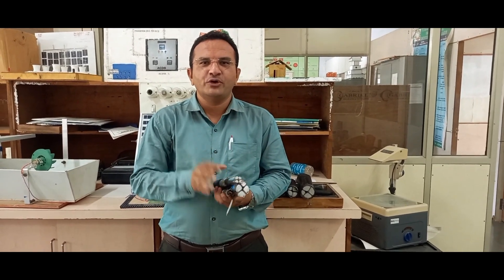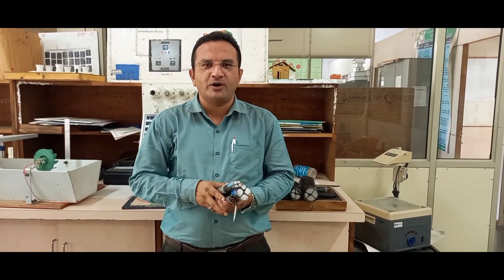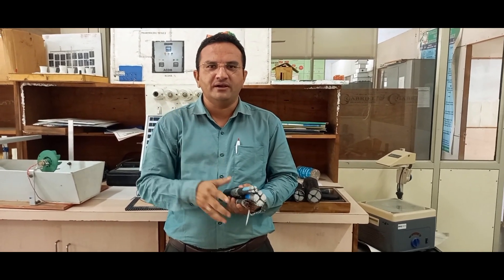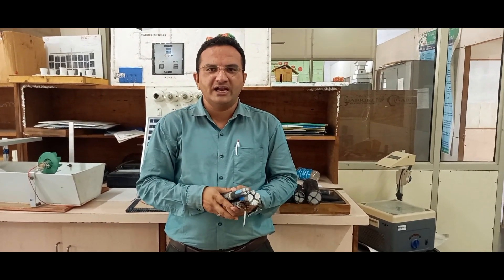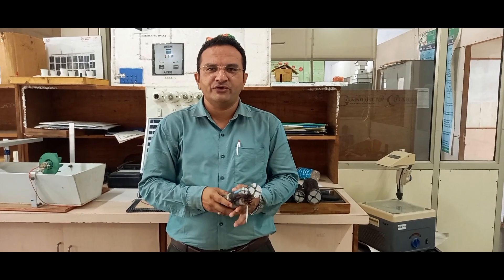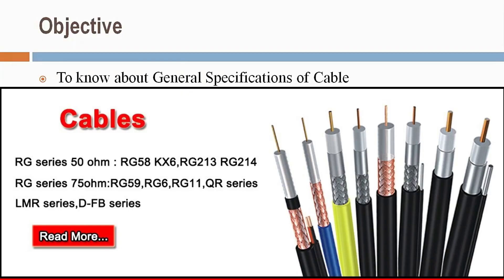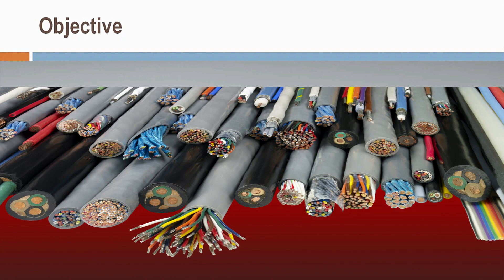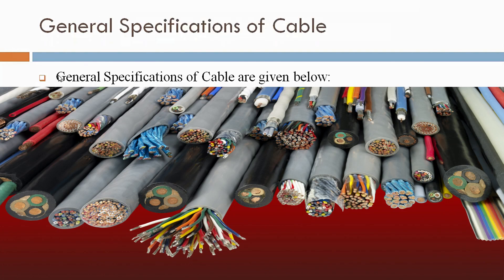Jai jin friends, today we will discuss about general specifications of cable. To know about general specifications of cable, there are mainly four general specifications we will cover. First, characteristic impedance.